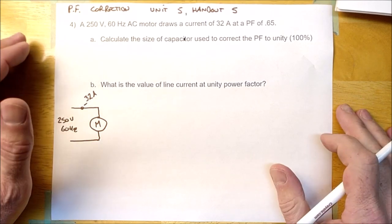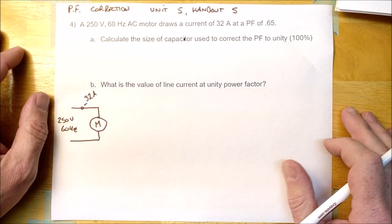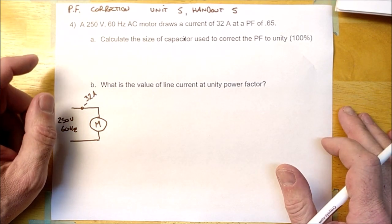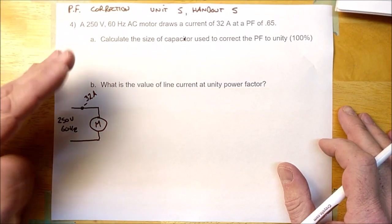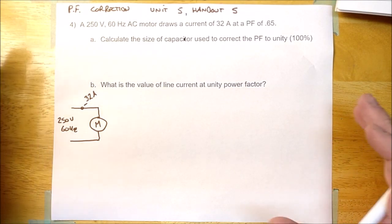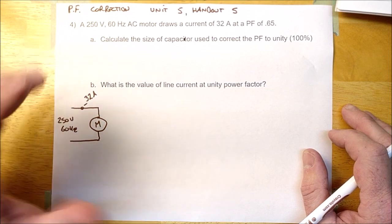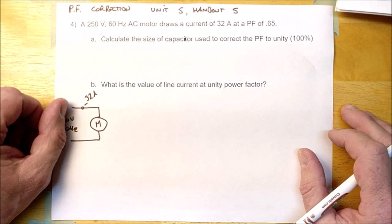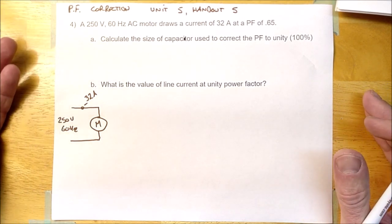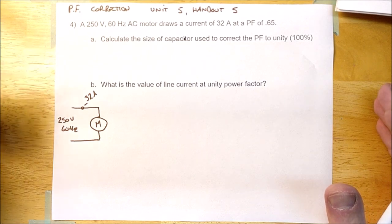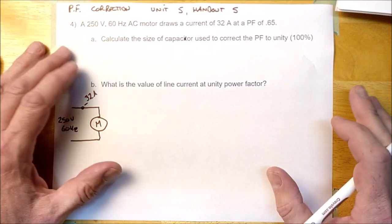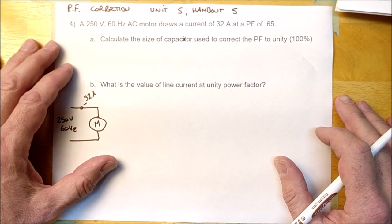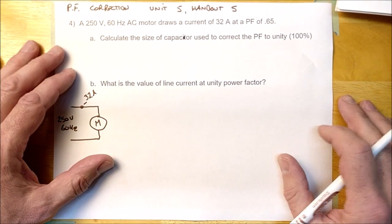Power factor correction is basically adding a capacitor — 99% of the time in parallel with loads — in order to reduce the power factor. Because if you recall, there is true power and reactive power, and then there's the VA, which is the total power the circuit's using. It's the sum of the two powers. But your kilowatt-hour meter measures true power, and reactive power is ignored by the kilowatt-hour meter. That's really annoying to the supply authority — they just charge you for your true power.